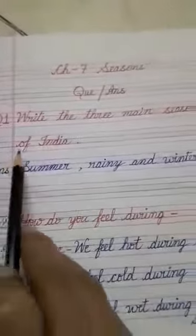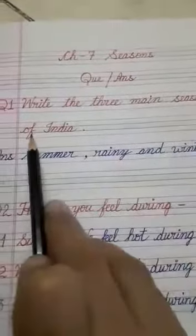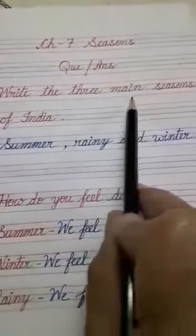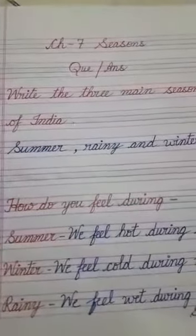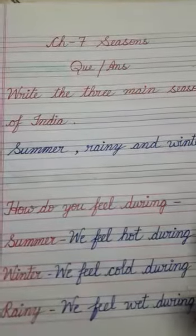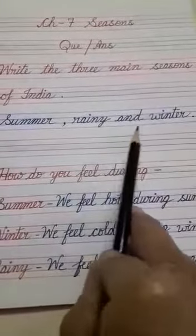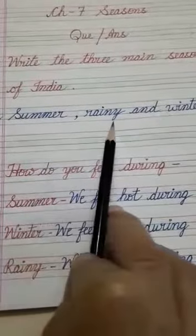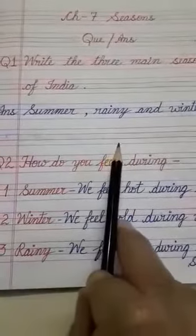Question number 1: Write the 3 main seasons of India. India के जो main 3 seasons हैं, आपको उनके नाम बताने हैं. The answer is: summer, rainy, and winter. Now leave a line.